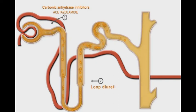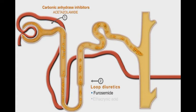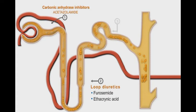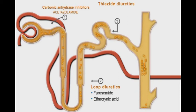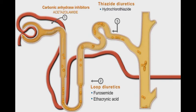Loop diuretics work on the ascending loop of Henle. This group includes furosemide and ethacrenic acid. Thiazide diuretics work on the distal convoluted tubules. Examples of this group include hydrochlorothiazide and bendroflumethiazide.